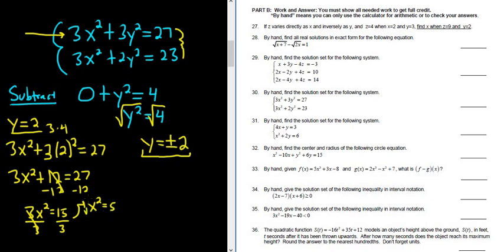Then when we take the square root of both sides, again, we get a plus or minus. So x equals plus or minus the square root of 5.